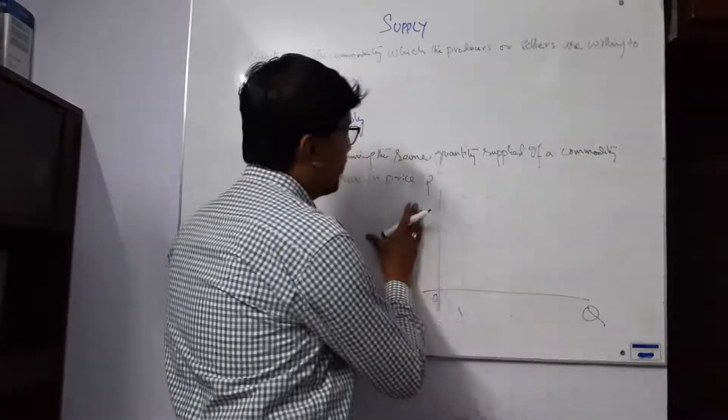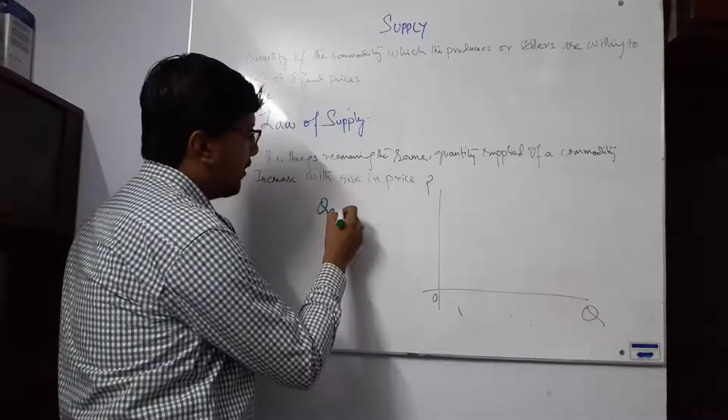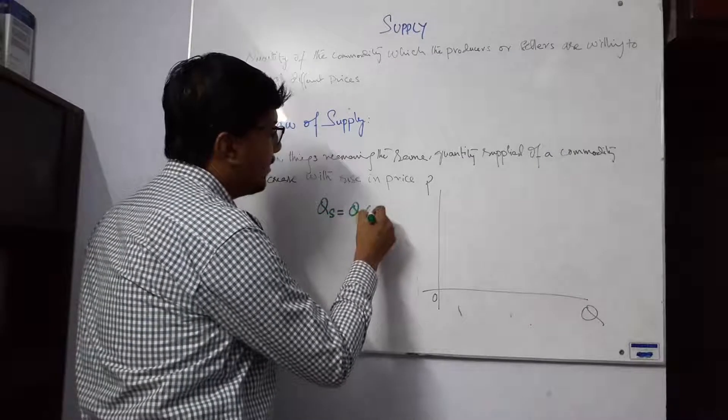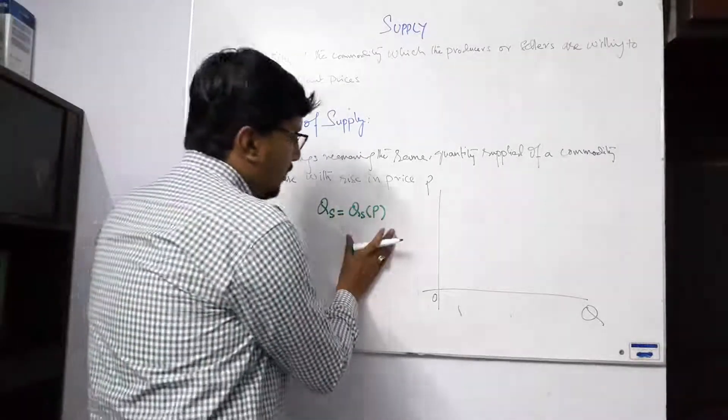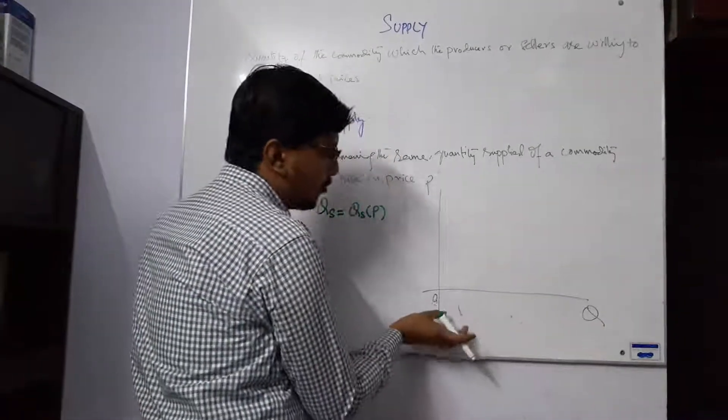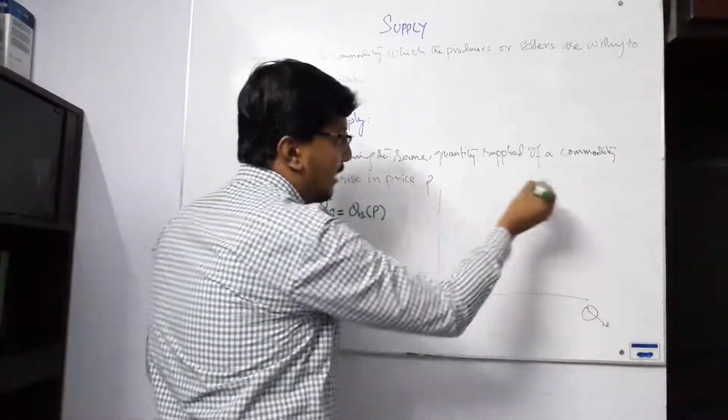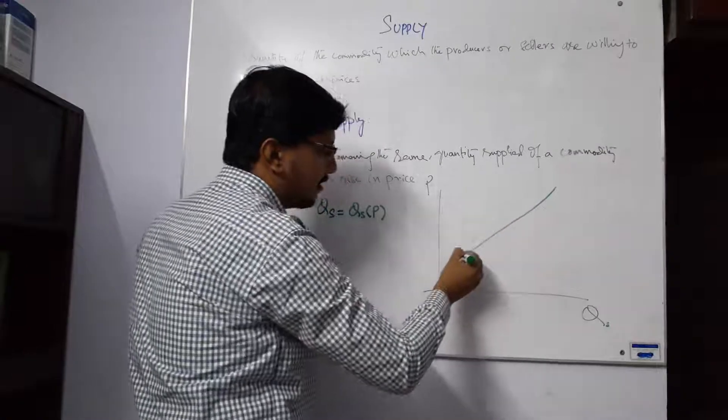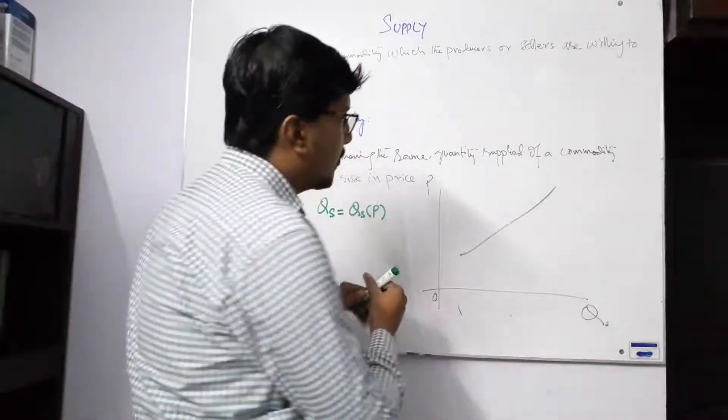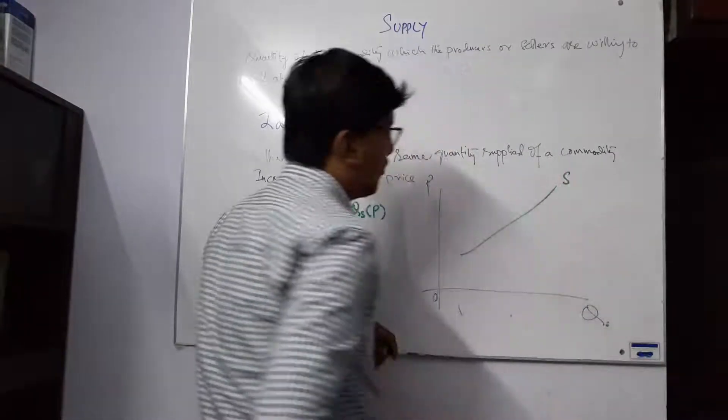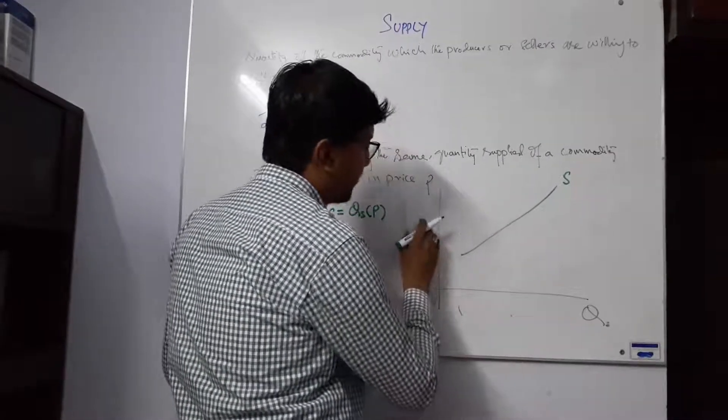We can write it this way: quantity supplied, and these are your prices. What will be the phenomena? Quantity supplied is equal to, quantity supplied is a function of prices. We may write it in this way. What is happening here? These are the commodities. Quantity supplied is increasing and prices are also increasing. That means we have this type of relationship, a positive relationship. This is the positively sloped curve and we are saying that this is S. What is happening here? As we increase quantity, prices are also increasing. That means with the increase in prices, quantity supplied will increase.